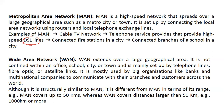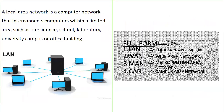WAN — Wide Area Network — extends over a very large geographical area, set up using telephone lines, fiber optic, and satellite links. It's used by large multinational organizations to communicate with branches across the world. MAN can cover up to 50 kilometers, whereas WAN can cover more than 50 kilometers, reaching up to thousands of kilometers.